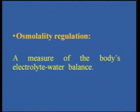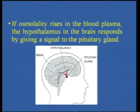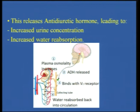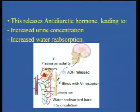Osmolality regulation is a measure of the body's electrolyte-water balance. If osmolality rises in the blood plasma, the hypothalamus in the brain responds by giving a signal to the pituitary gland. When plasma osmolality increases, this releases the antidiuretic hormone — ADH — which binds with the V2 receptor. This results in increased urine concentration and increased water reabsorption. So the kidneys are very important in osmolality regulation in the body.